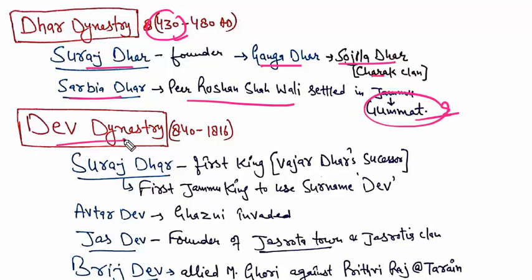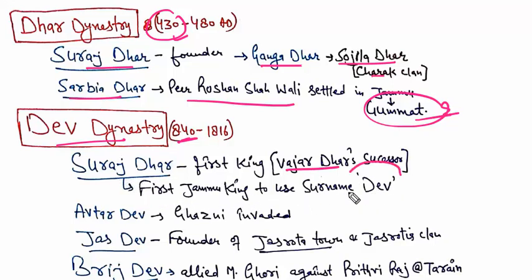Next comes the Dev dynasty. The Dev dynasty was established in 840 AD. The Dev dynasty is the first king to use the surname Dev. The Dev dynasty's kings ruled from 840 to 1816. We will discuss the different kings between them.